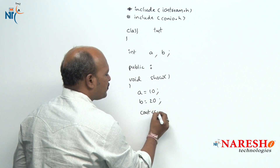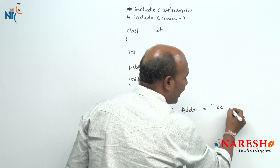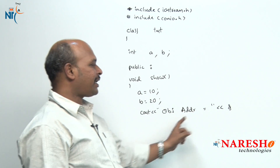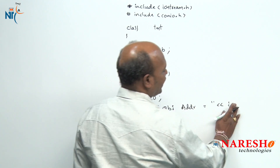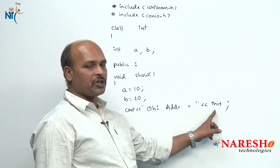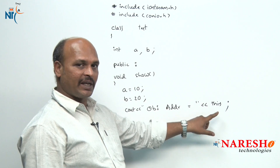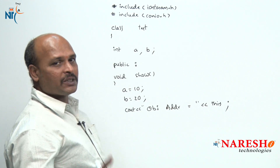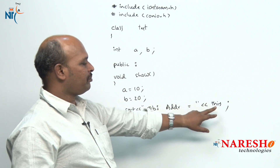To print the object address, generally we use `cout << &objectName`, but the problem is this is inside the member function and there is no object created there. That is why we write `cout << this` — `this` is a pointer that returns the current object address. Whenever this class object is created, objects are memory areas, so that memory address is printed.